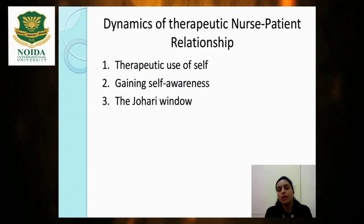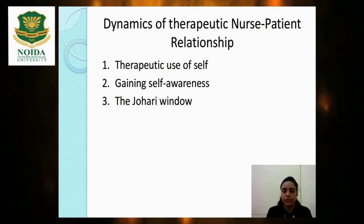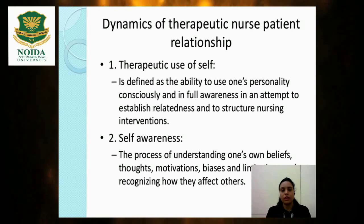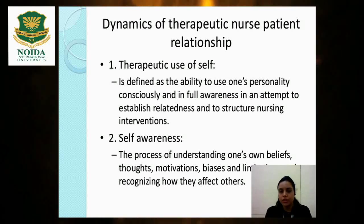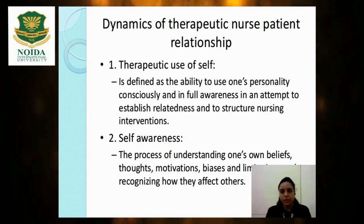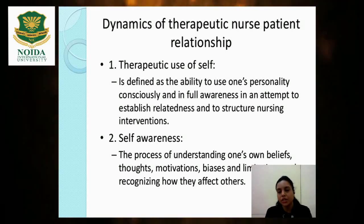There are three dynamics of the therapeutic nurse-patient relationship: therapeutic use of self, gaining self-awareness, and the Johari Window. Therapeutic use of self is defined as the ability to use oneself — one's own personality — consciously in an attempt to establish relatedness and structure nursing interventions. That means the nurse uses their own personality consciously to provide care and meet the patient's needs.